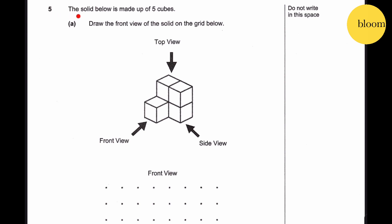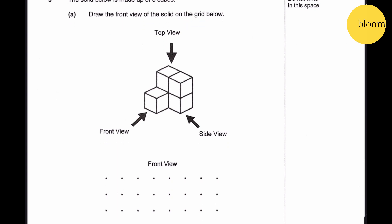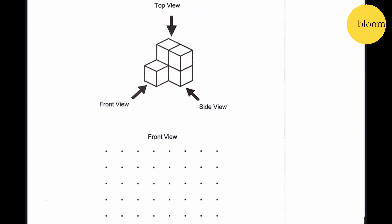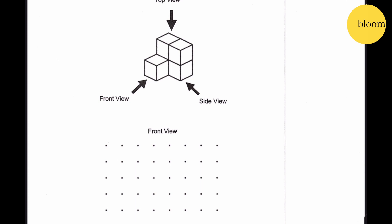Question 5: The solid below is made up of 5 cubes. Draw the front view of the solid on the grid. We will only see this face, this face, this face, this face, and this face.